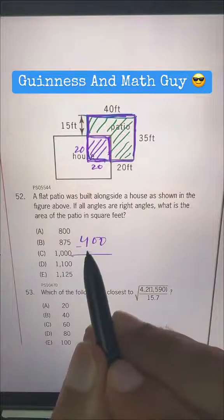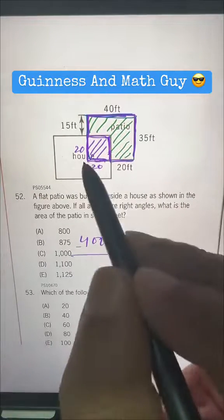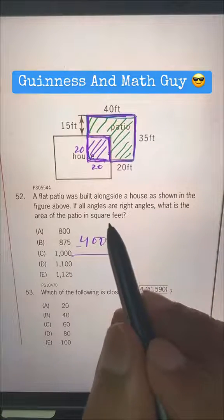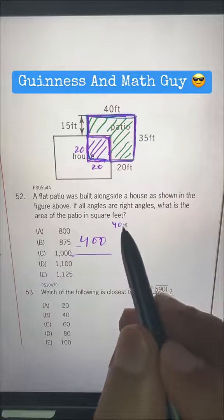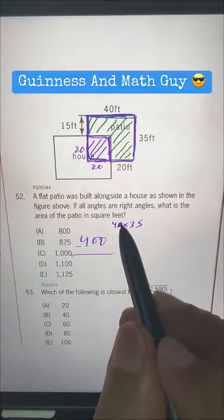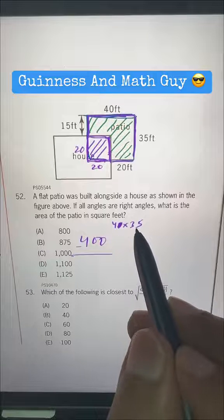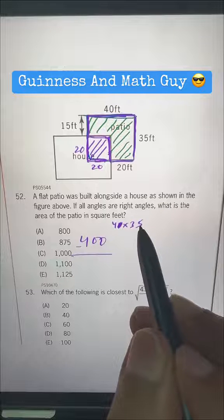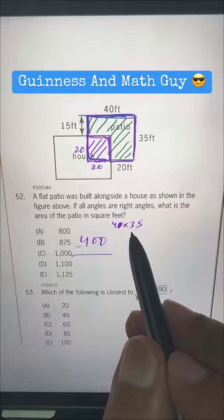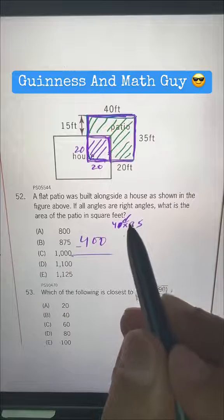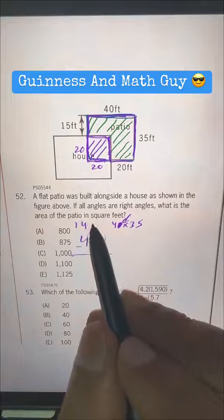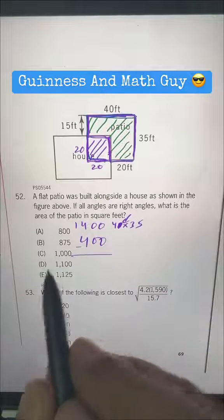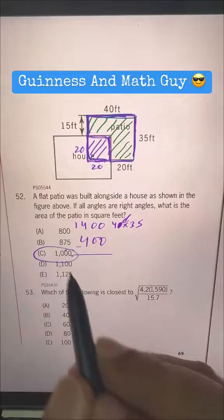And we have to subtract this 400 from this area, 40 times 35. Just ignore this 0. And 4 times anything is just double that thing twice. Double of 35 is 70, and double of 70 is 140. And put that 0 again. So 140 and then again 0. 1400 minus 400 is 1000. That's our answer choice C.